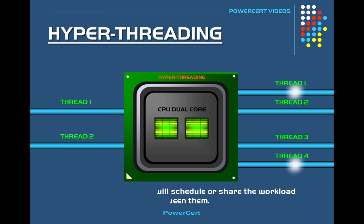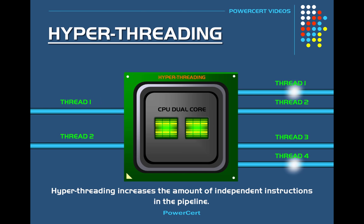That is the main function of hyper-threading: to increase the amount of independent instructions in the pipeline. By doing this, it eliminates any idle time on the CPU, which makes the computer run faster and more efficiently.